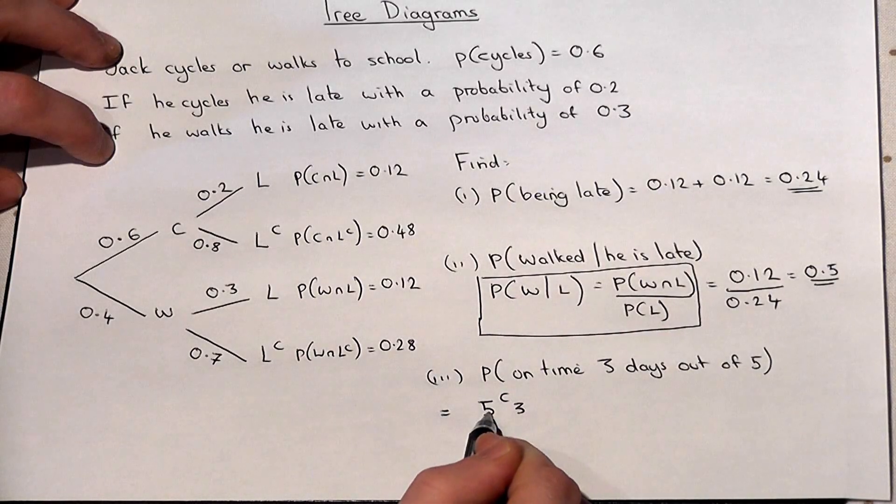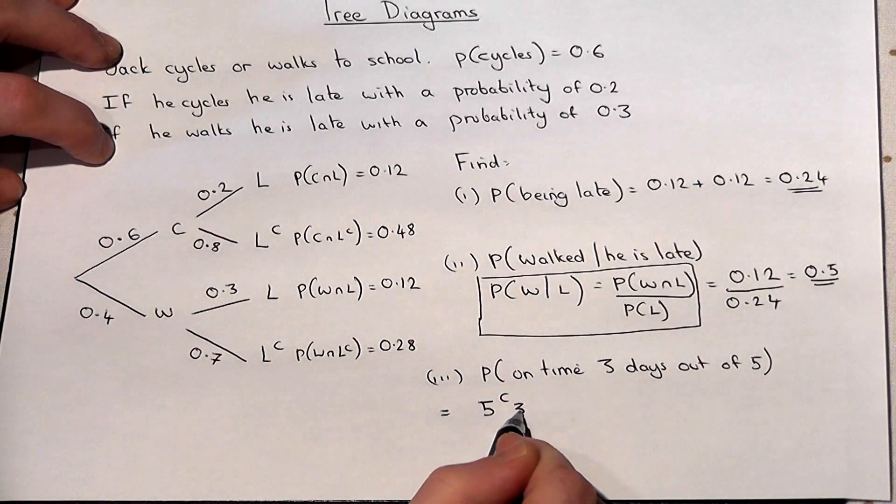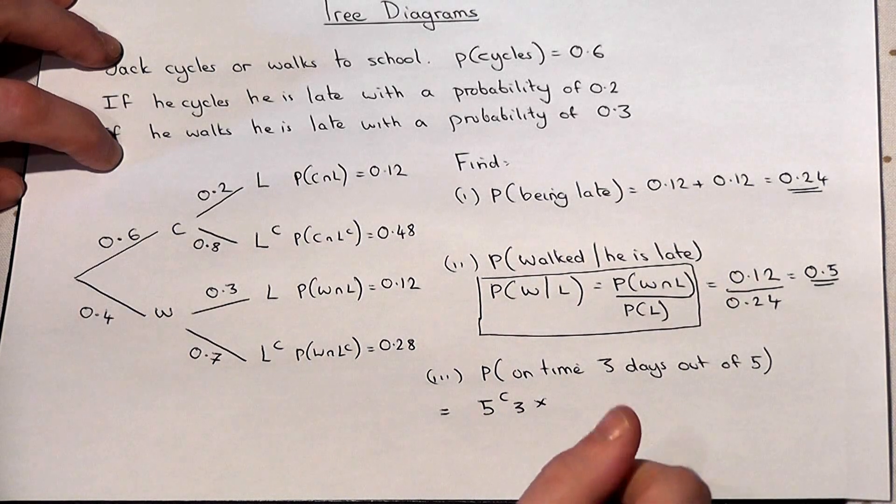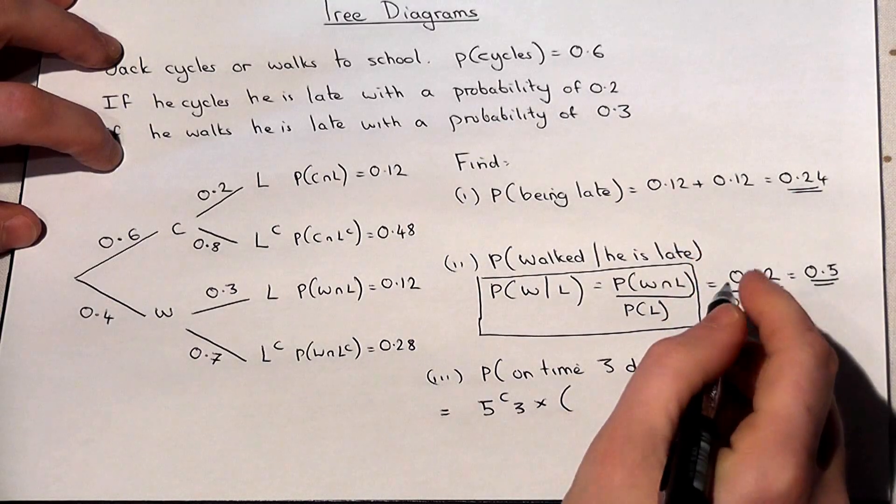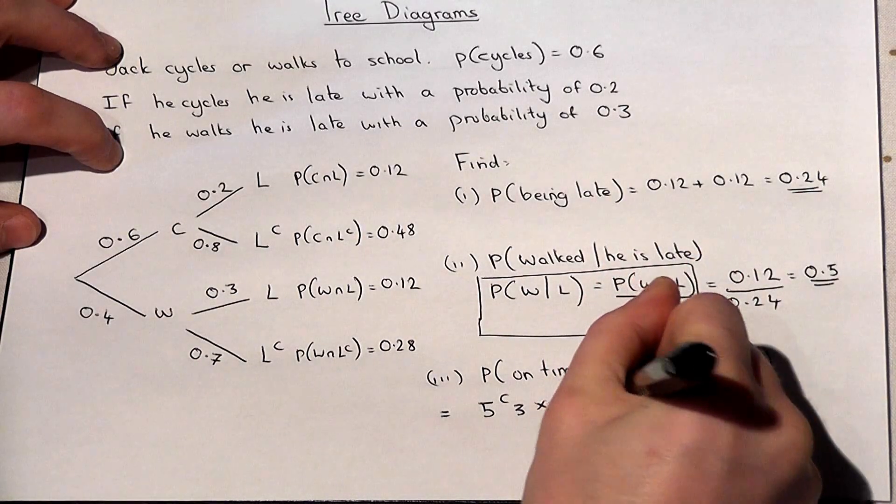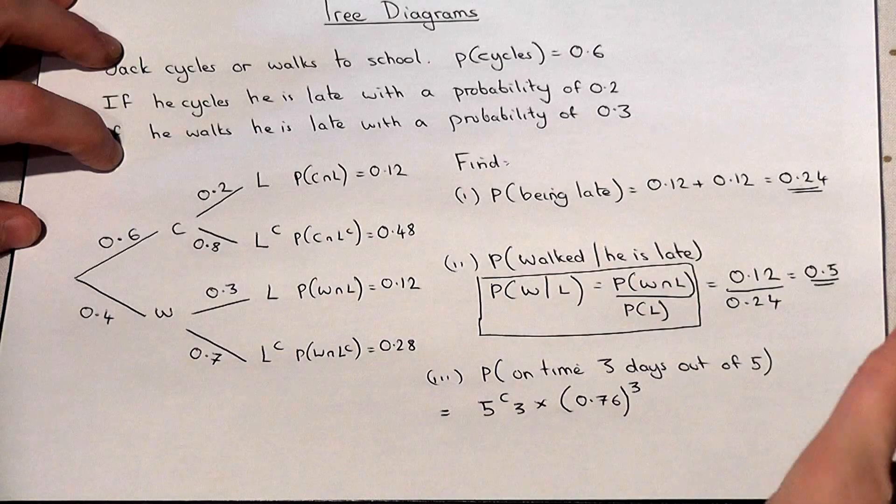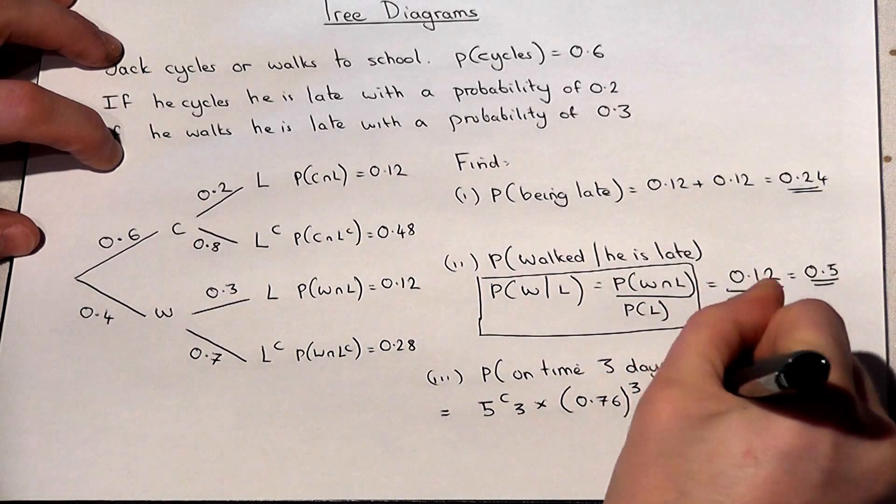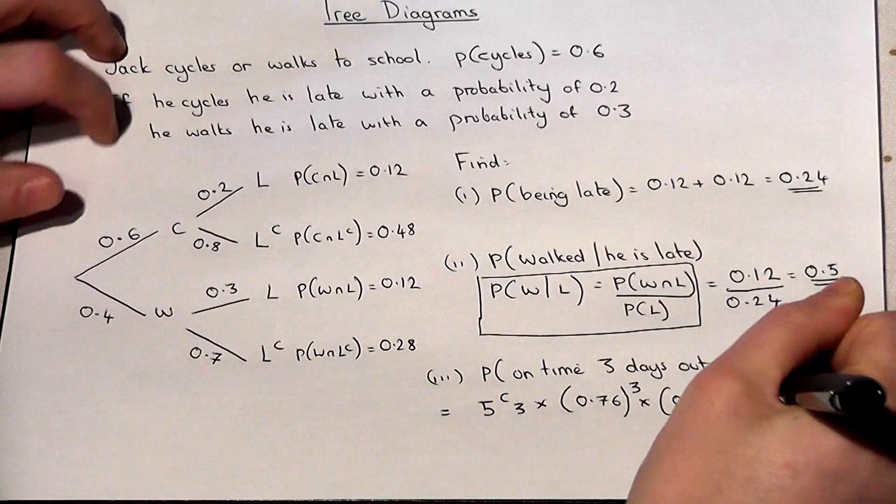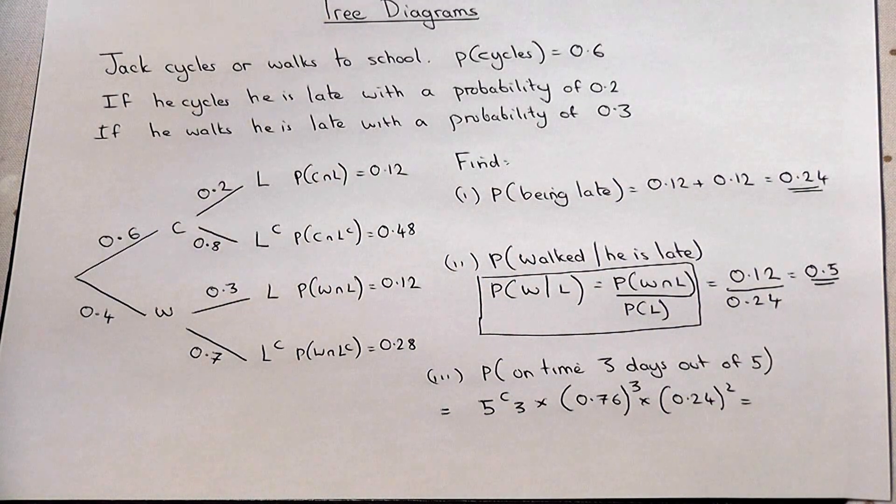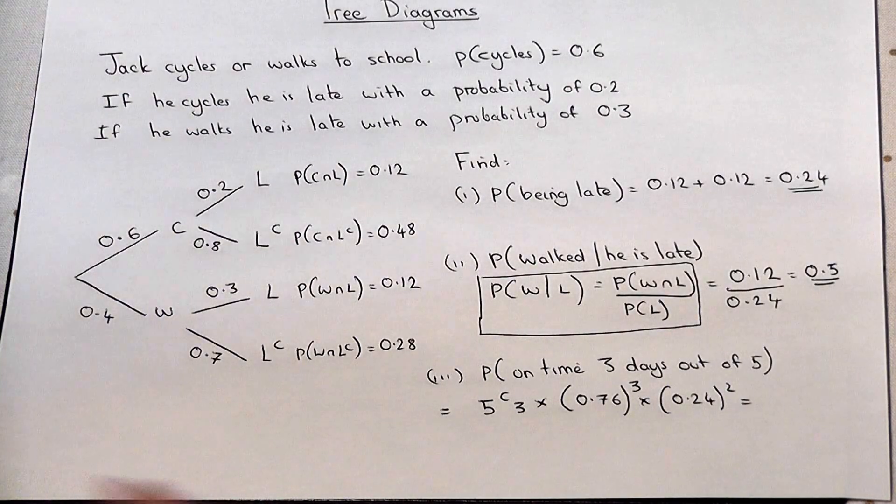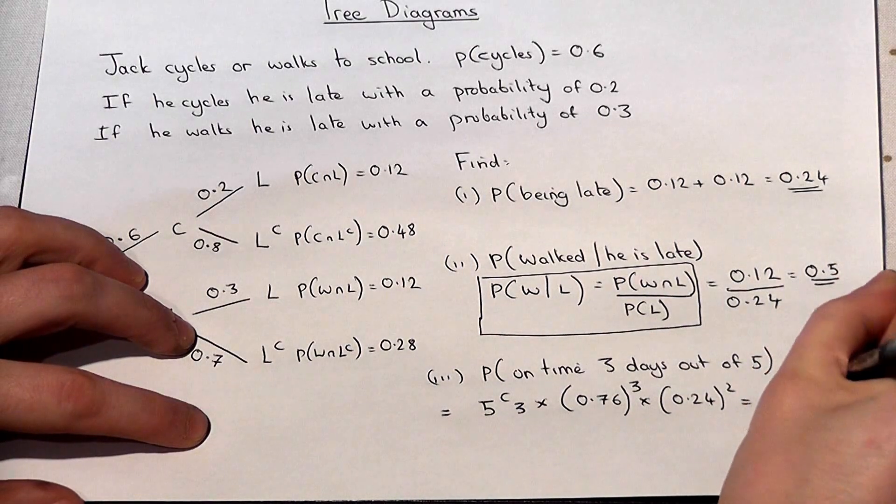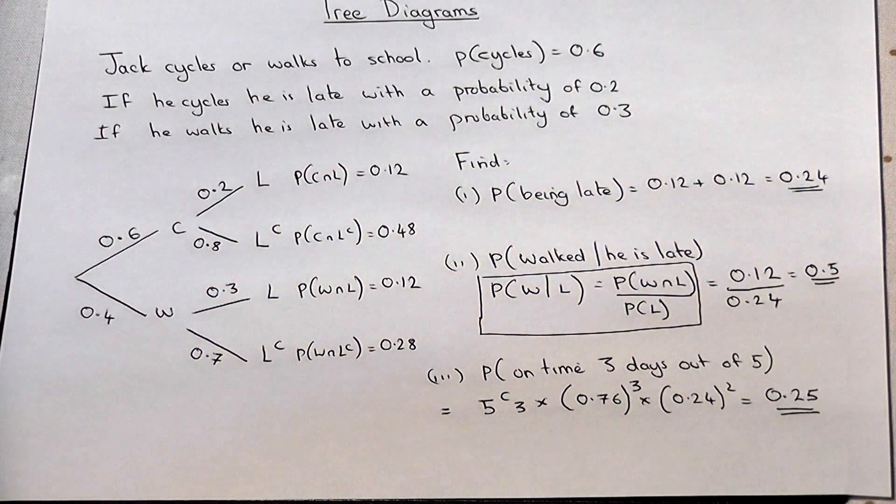So out of five days we want to be on time three times. Now the chance of being late is 0.24. The chance of being on time is therefore 1 minus that which is 0.76 and we want to be on time three times therefore late twice. So therefore we put that into our calculator and then work out that the answer is 0.25 to two significant figures.